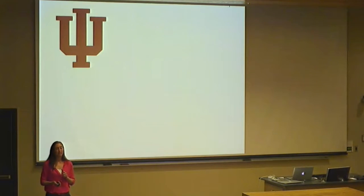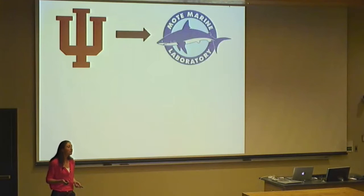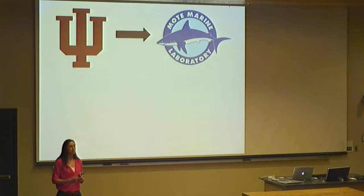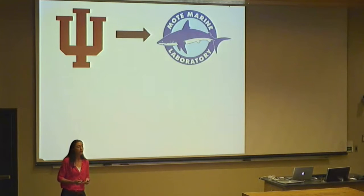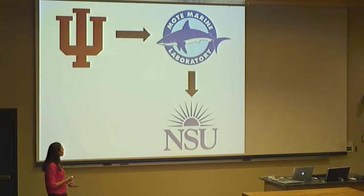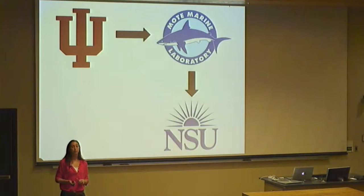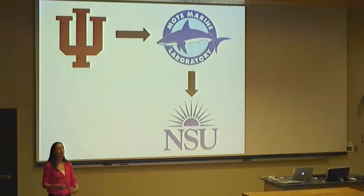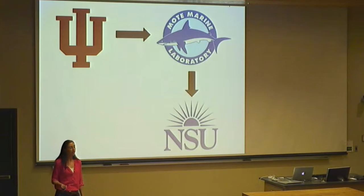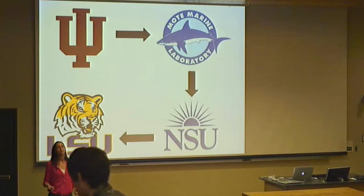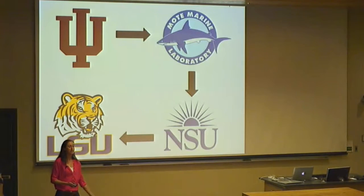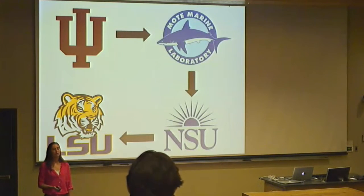I got my undergrad at Indiana University, knowing I wanted to do something in biology but not quite sure what. After graduation, I did an internship for a year at Mote Marine Lab in Sarasota, Florida, where I got exposed to different lab and field work. My advisor's collaborator was taking graduate students, so I applied to Nova Southeastern University in Fort Lauderdale for my master's — that's when I started working on sponges and got devoted to population genetics, ecology, and evolution in marine invertebrates. I was reading a lot of papers by Mike Helberg, emailed him to ask if he had space in his lab, he said yes, and that's how I came to LSU.